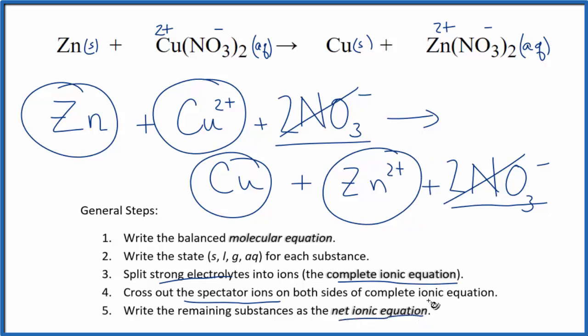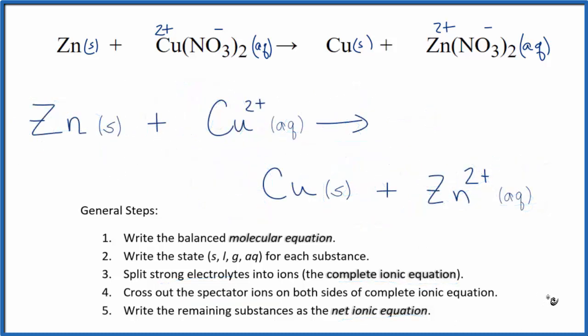Let me write the states in. This is the net ionic equation for Zn plus Cu(NO3)2, zinc plus copper(II) nitrate. This is Dr. B, thanks for watching.